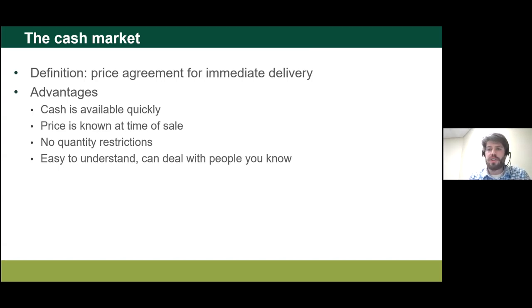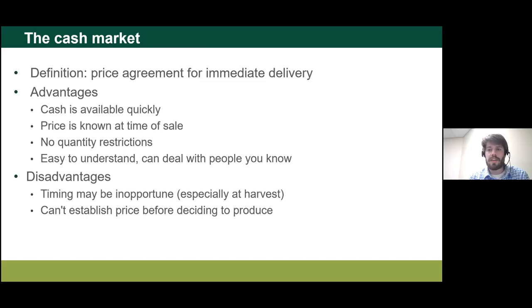A refresher on the cash market: this is a price agreement for immediate delivery — you have the grain and you're selling it right now. Advantages include cash available quickly, price is known at the time of sale, no quantity restrictions like the 5,000-bushel futures contract obligation, and it's simple. The big disadvantage is you're not taking advantage of the flexibility that's available to you. At harvest when basis is really weak, it could be extremely bad to have to sell in the cash market and miss out on basis strengthening over time. Also, you can't get a price on new crop in the cash market — that requires some sort of forward contract agreed before you have the grain.